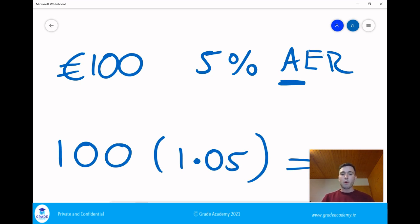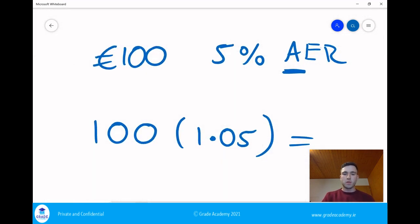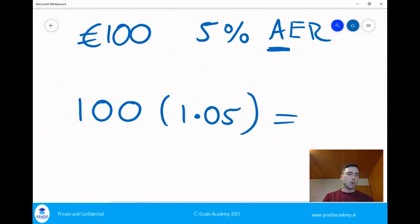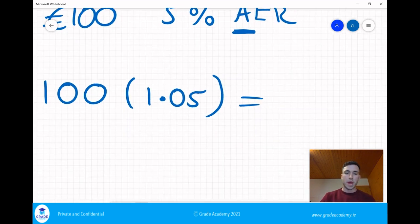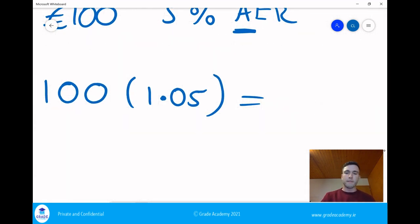How would we figure out how much you'd have after a year? You would multiply 100 by 1.05. That's how you'd figure out how much you'd have after a year because you're adding 5% onto it which is the equivalent of multiplying by 1.05. So we'd have 105 euro.